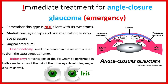I is for immediate treatment for angle closure glaucoma. This is an emergency — not a silent type. Medications can be used to lower IOP like eye drops or oral medications, along with a surgical procedure like a laser iridotomy, where a small hole is created in the iris with a laser to drain extra aqueous humor. A more traditional surgery is an iridectomy, where parts of the iris are removed. This may be performed in both eyes as a preventative measure, since there is a risk of both eyes developing angle closure glaucoma.